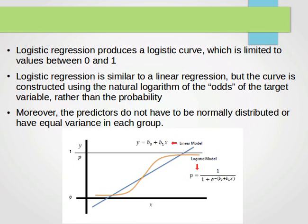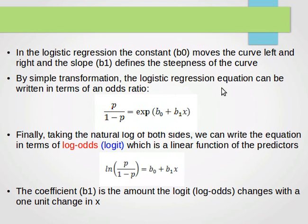By simple transformation, the logistic regression equation can be written in terms of an odds ratio: p over 1 minus p equals e to the power b0 plus b1x. Finally, taking the natural log of both sides, we can write the equation in terms of the log-odds or logit, which is a linear function of the predictor. The ln cancels the exponent, so we end up with ln of p over 1 minus p equals b0 plus b1x. The coefficient b1 is the amount the logit changes with one unit change in x. This is called the logit transform.